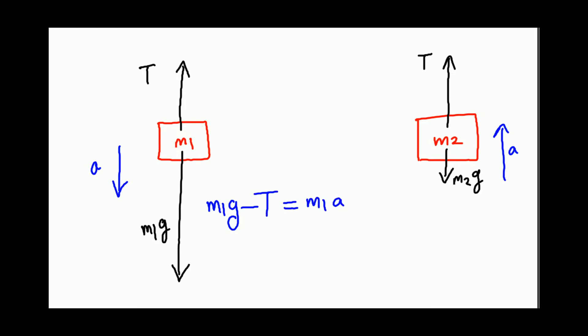For mass M2, it is accelerating up, so force up has to be greater than force down. So tension minus M2G equals M2A. All right, so let's go to the next page.